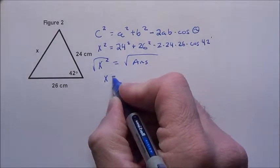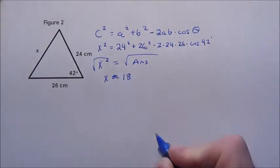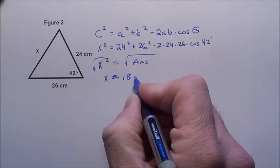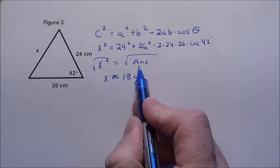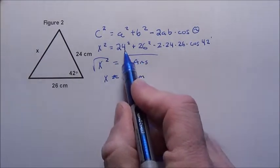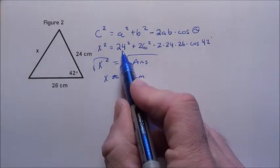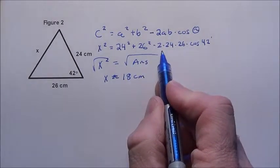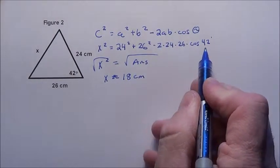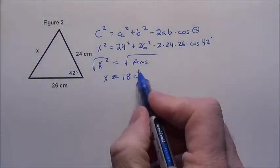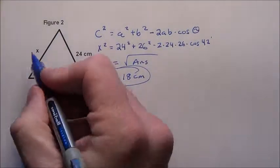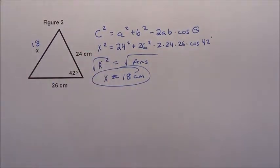and I got x comes out to be approximately 18 degrees—not 18 degrees, 18 centimeters in this case, sorry, it's a side length. So when I take the square root of x², I get x. Just enter it all on the calculator: 24² + 26² - 2×24×26×cos(42°). Just crank it out there, then take the square root of it, and 18 is what you're going to get. So I know this side over here is 18 centimeters.